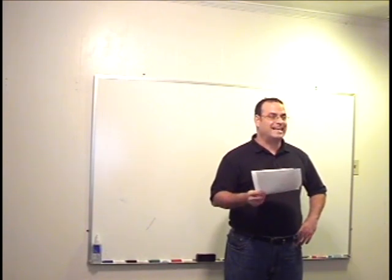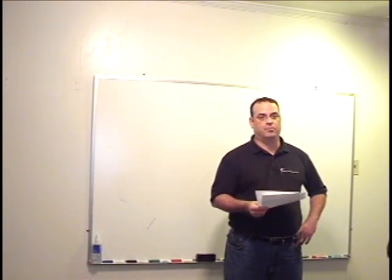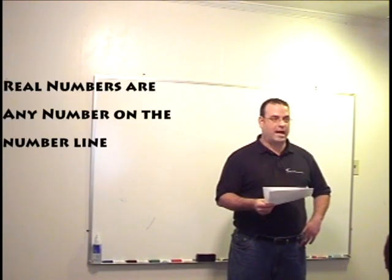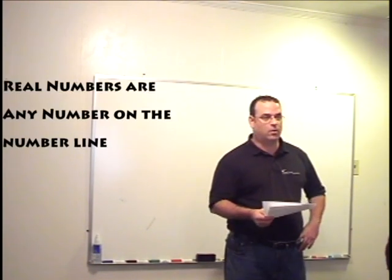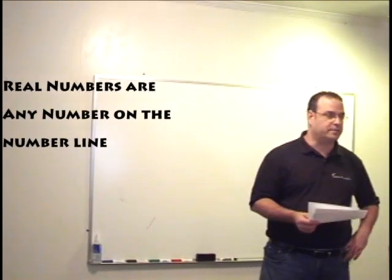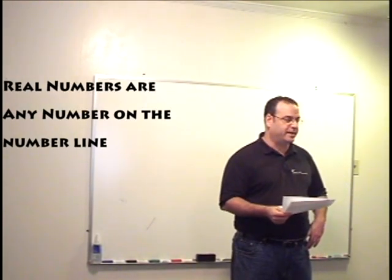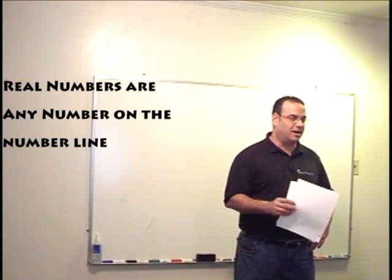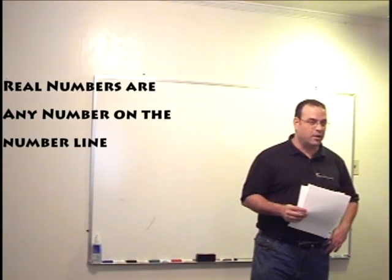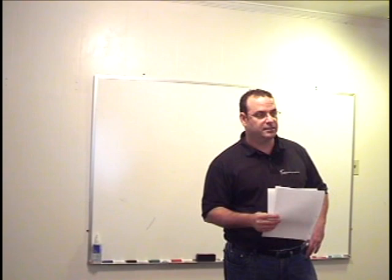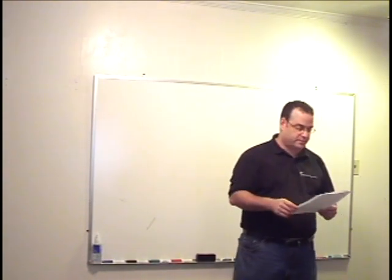So, a real number is any number on the number line. Rational, irrational, whole, integer, counting, but not imaginary. The square root of negative one is not on the number line, but the square root of two is. You just can't ever find its decimal place, all right?